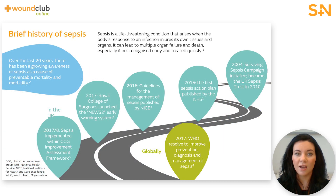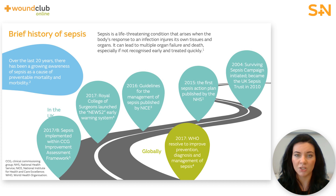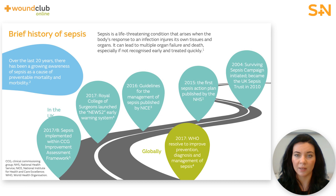Sepsis is a life-threatening condition that arises when the body's response to an infection causes it to attack its own tissues and organs. In sepsis, a patient's immune system goes into overdrive, setting off a series of reactions including widespread inflammation. This can cause a significant decrease in blood pressure, reducing the blood supply to vital organs and starving them of oxygen. Sepsis can lead to multiple organ failure and death, especially if not recognised early and treated quickly.